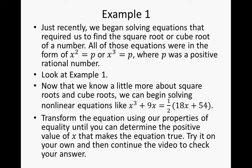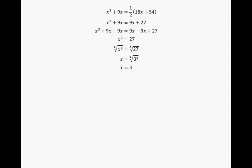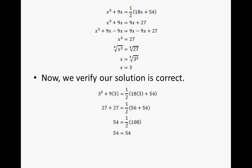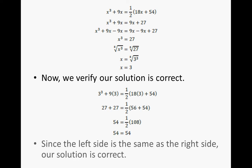All right, you should be done with example 1. And this is something like what you should see, x being equal to 3. Now, we verify our solution is correct. When we plug in x is 3, we should get that 54 is equal to 54. Since the left side is the same as the right side, our solution is correct.